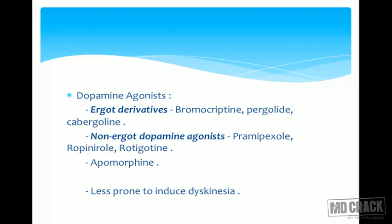Another group of drugs for treating Parkinson's disease is dopamine agonists. There are two types: ergot derivatives — bromocriptine, pergolide, cabergoline — which are rarely used now due to side effects; and non-ergot dopamine agonists — pramipexole, ropinirole, and rotigotine. When there is significant functional impairment, you can choose either levodopa-carbidopa combination or a dopamine agonist such as pramipexole or ropinirole.